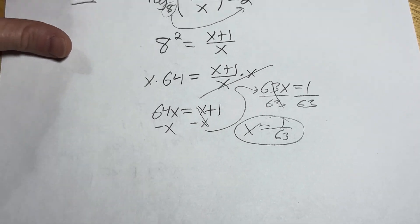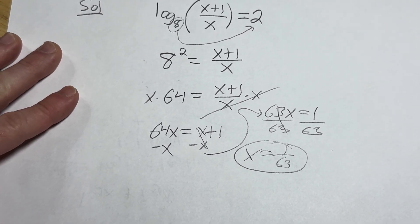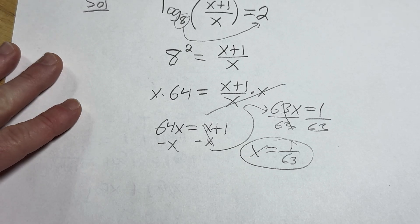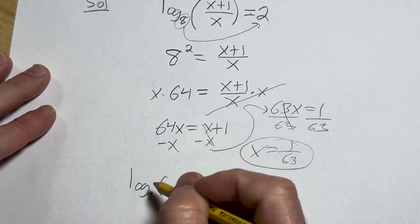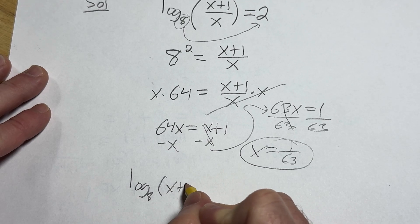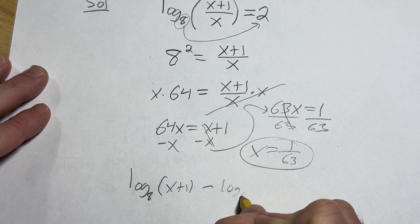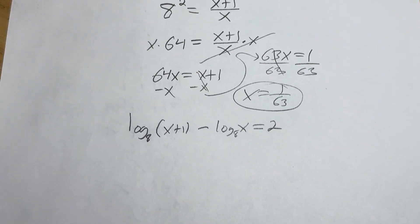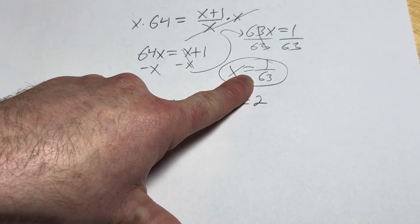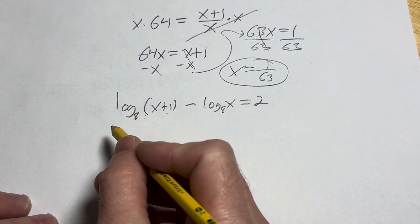Now let's check it. Let's just check this to make sure that it is a legitimate answer. So here's our original problem. Log base 8 of x plus 1 minus log base 8 of x equals 2. All right. So to check this, we're going to take this number, 1 over 63, and put it everywhere we see an x.